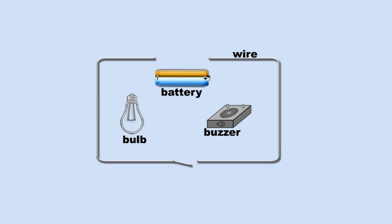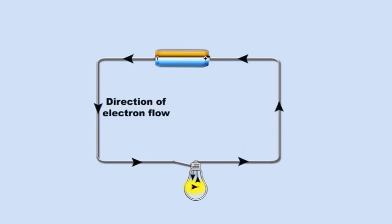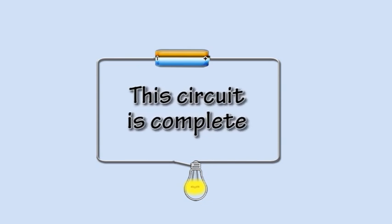To make the circuit work, the wires must connect the parts of the circuit together so electricity can travel between the negative and positive terminals of the battery. The light bulb lights up in this circuit because the circuit is complete.